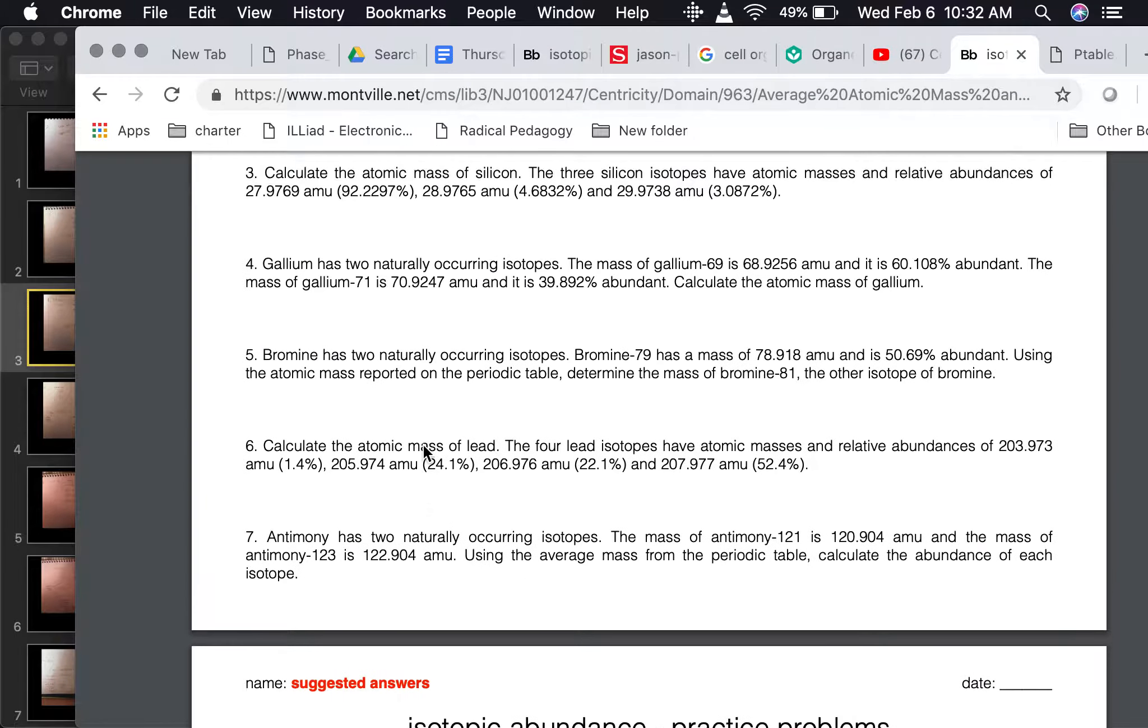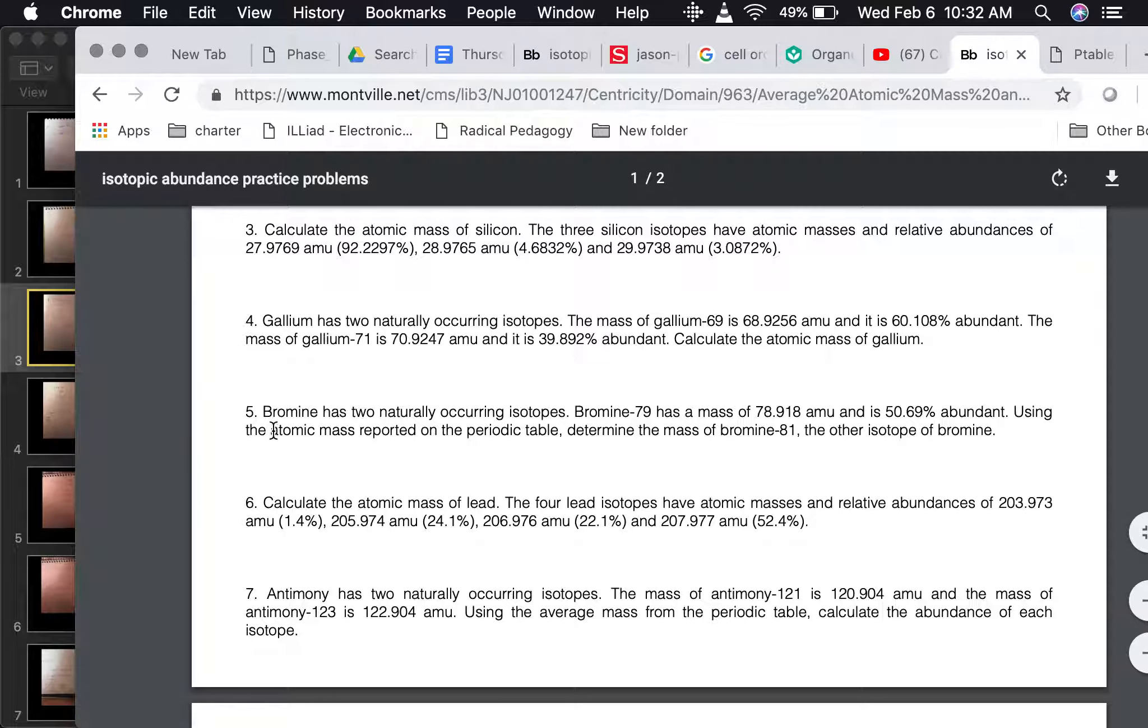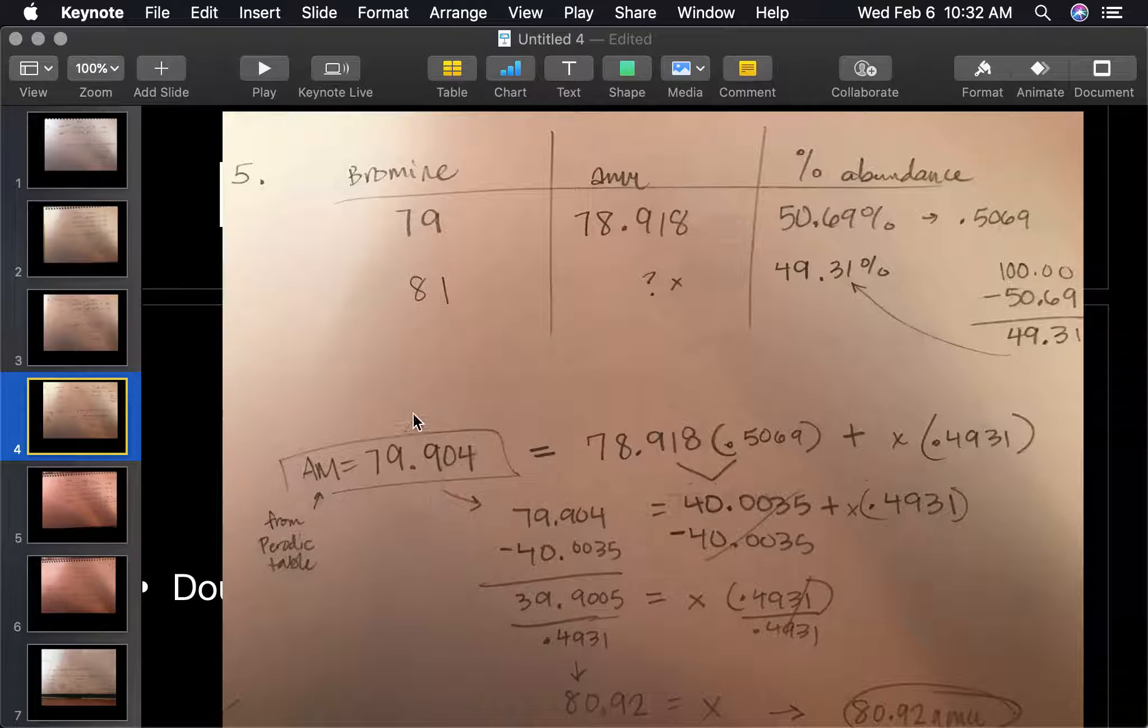Number five is bromine. Bromine has two naturally occurring isotopes. It tells us the first one, its atomic mass, its abundance. Now this one is a little different. This is where we're trying to figure out the mass of bromine 81, the mass of the second isotope. They don't give us a lot of things. First what I did is I looked up bromine on the atomic periodic table. If you find bromine, it's right here, 79.904. It tells us one isotope has this atomic mass and this is the abundance. It didn't tell us these two, but because we're smart, the entire total abundance should add up to 100. So I took this 100 and subtracted this abundance right here and got this value of 49.31.